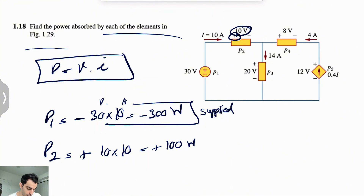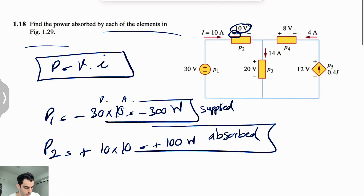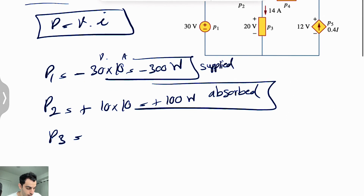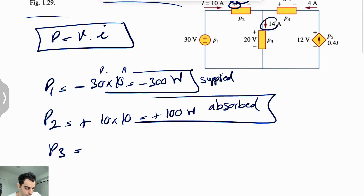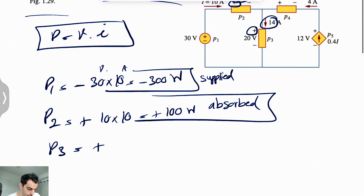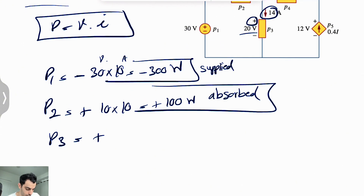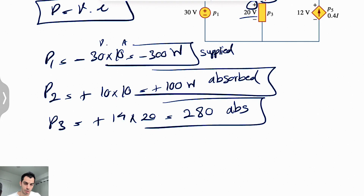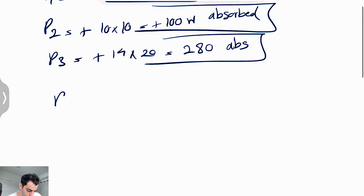The positive sign shows that it's absorbed. Let's move on to P3. For P3 we can see we have a different current — 14 amps — and it's entering the positive pole, so also positive. 14 times the voltage of 20 gives us positive 280 watts — again absorbed.